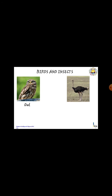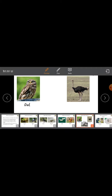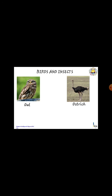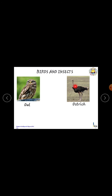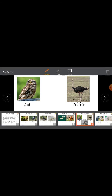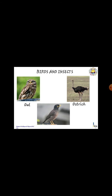Ostrich, O-S-T-R-I-C-H. Children, observe the ostrich — it has a long neck and long legs compared to other birds. Ostrich has a long neck and long leg, but it has a small beak. Myna, M-Y-N-A-H. These all are examples for birds.